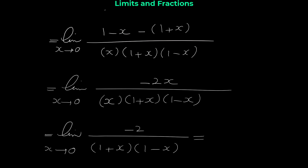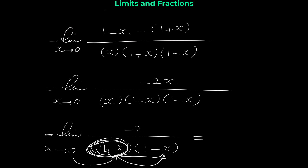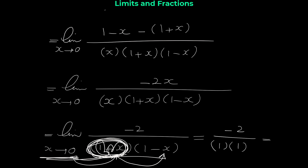Now that we've cancelled the common term, by direct substitution we can find this limit. Plugging in 0 for x: the first bracket is 1 + 0 = 1, the second bracket is also 1, so we have negative 2 over 1 times 1, and the limit is negative 2.